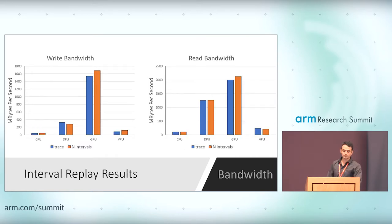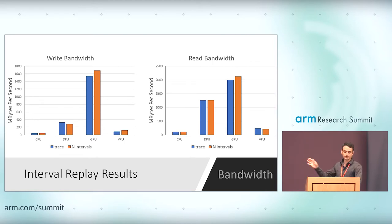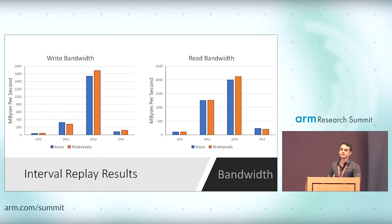Here are the interval replay results. I have megabytes per second on the y-axis — we're looking at bandwidth. In blue is what you'd get with a trace; in orange is what you'd get by replaying the intervals with the profile. We can see that we're capturing the bandwidth with pretty decent fidelity across a variety of devices: CPU, DPU, GPU, VPU, each running one or more benchmarks. However, this doesn't give us any speedup — we might as well just replay the trace.